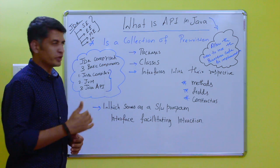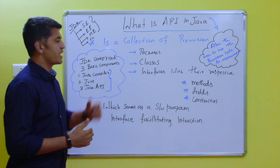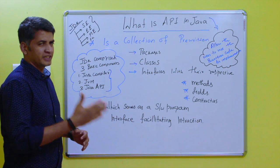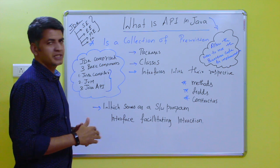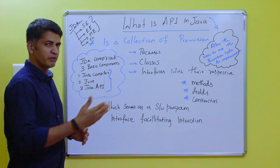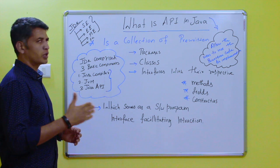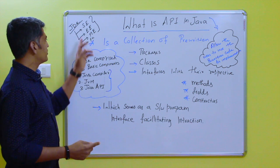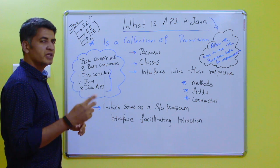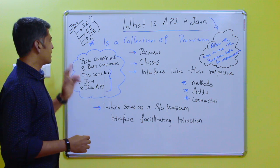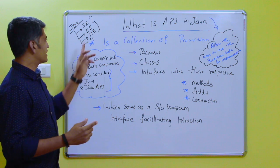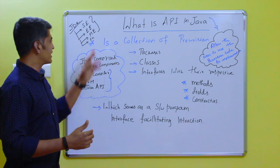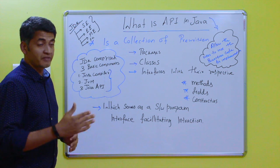Hi friends, so in this video we are going to see what is API in Java. Before that we need to know what are the types of platforms available in Java programming language. There are four types: Java Platform Standard Edition (SE), Java Platform Enterprise Edition (EE), Java Platform Micro Edition (ME), and JavaFX.